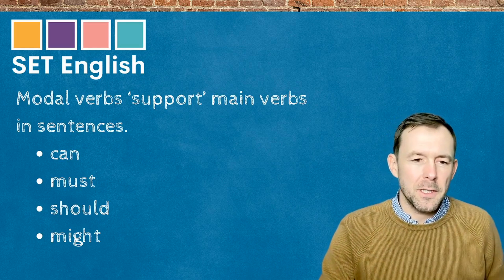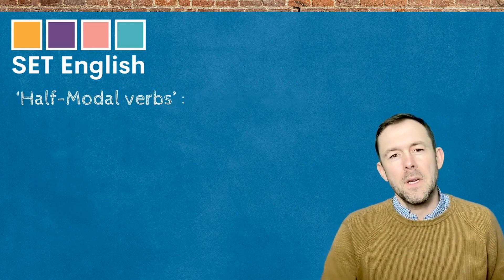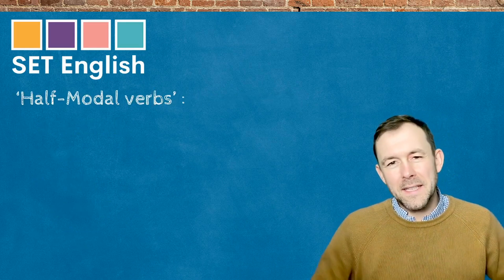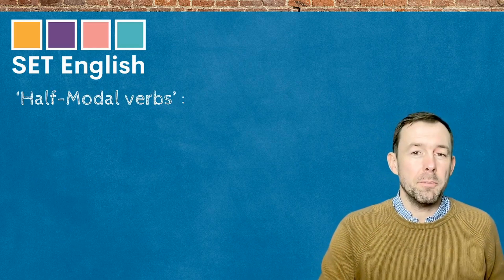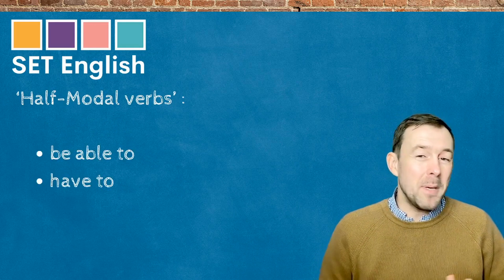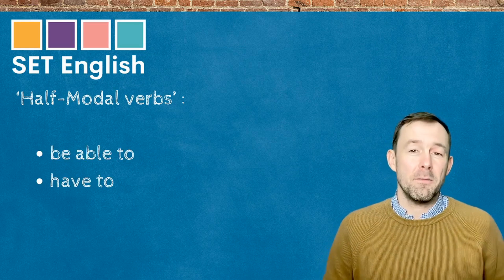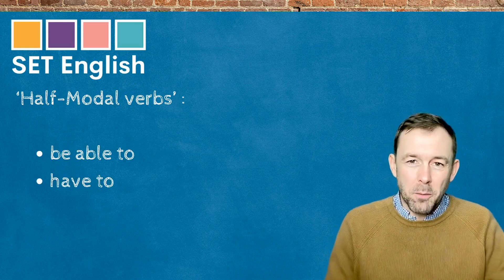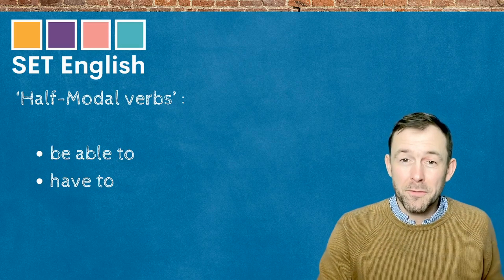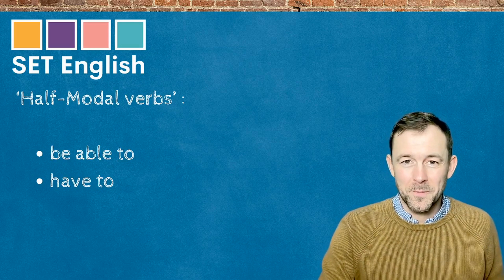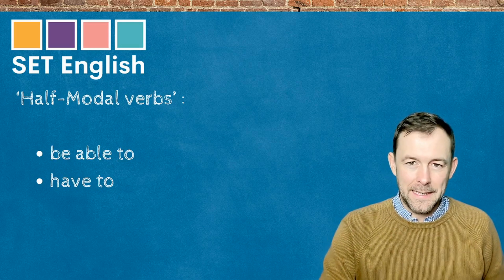We also have these half modal verbs, and a couple of those would be 'be able to' and 'have to.' They're called half modal verbs. They don't behave the same way that modal verbs do, and that's something that we're going to touch on today.